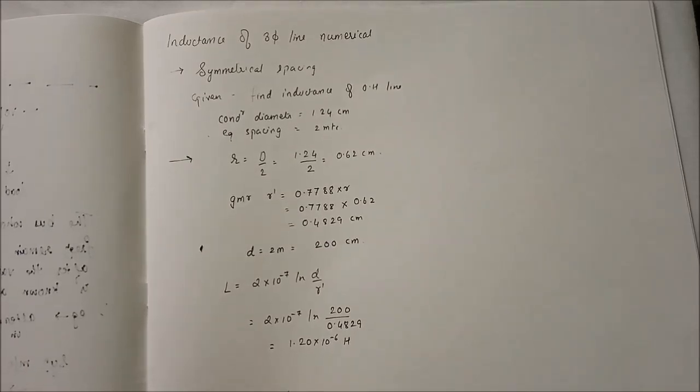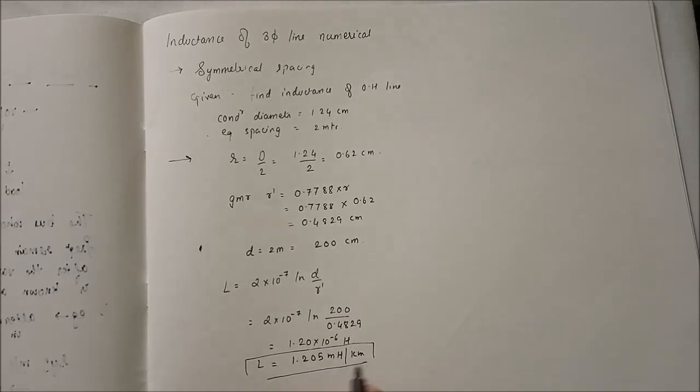Now we will convert into per kilometer, which is equal to 1.205 mH per kilometer. So this is the value of inductance, 1.205 mH per kilometer.